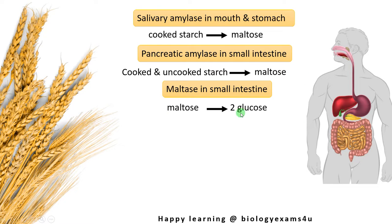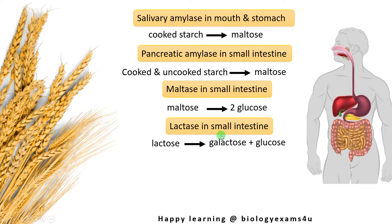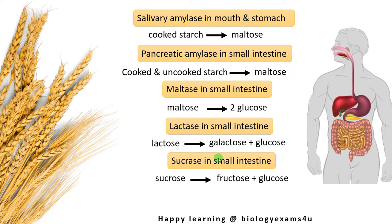There are three enzymes in the small intestine. The first is maltase, which converts maltose — a disaccharide — into two glucose units. Then lactase in the small intestine converts lactose — a disaccharide — into galactose and glucose. And finally sucrase in the small intestine converts sucrose to fructose and glucose. All these monosaccharides can be absorbed by the absorptive cells of the small intestine.